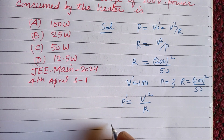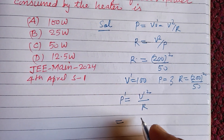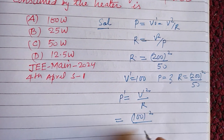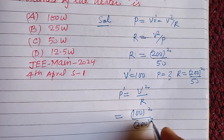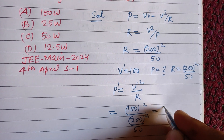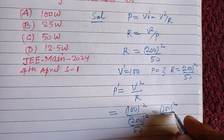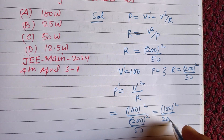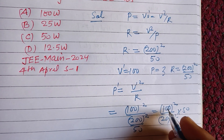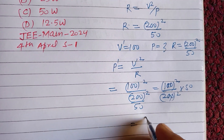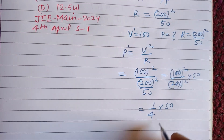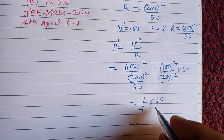Putting the values: V' = 100, so P' = 100² / (200² / 50). The 50 comes to the numerator, giving P' = 100² / 200² × 50. This simplifies to (1/4) × 50, since (100/200)² = 1/4.